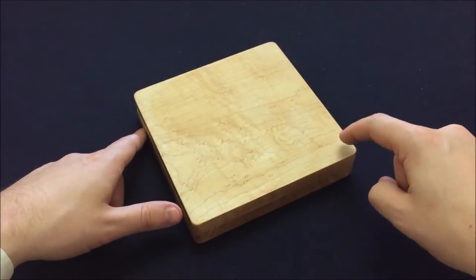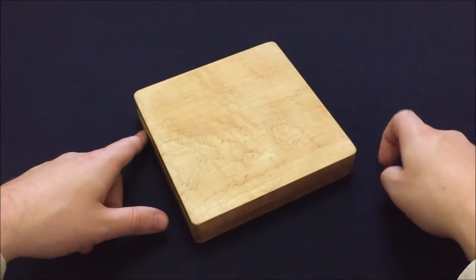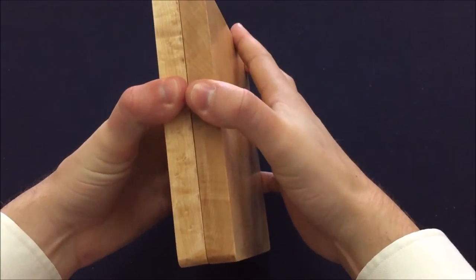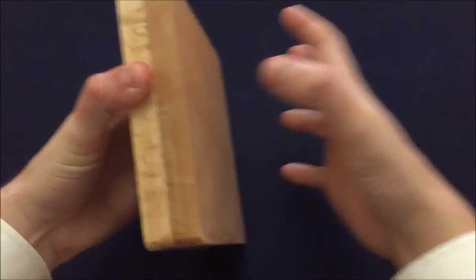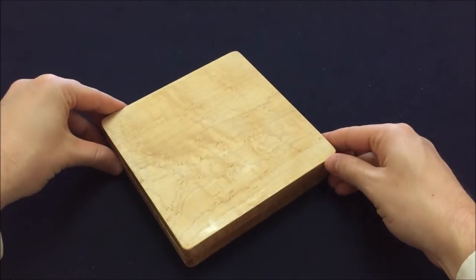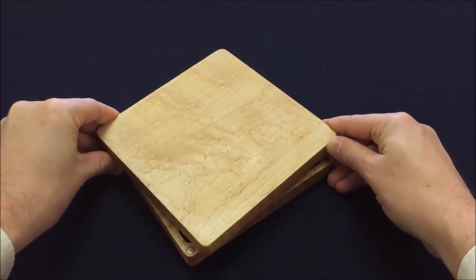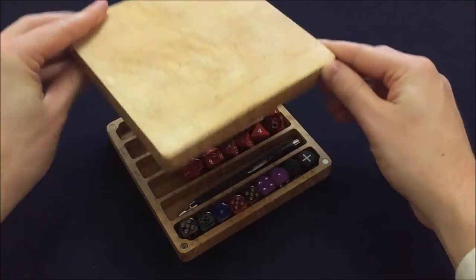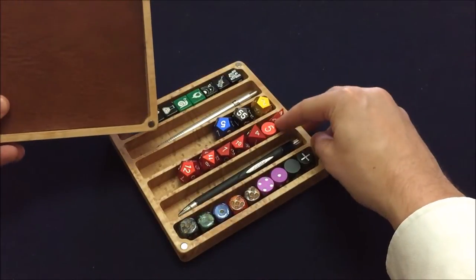Alright so the two pieces are held together by four magnets in the corners. Now to open it you're not really going to be able to just pull the two pieces straight apart. Those magnets really are pretty strong. But if you give a little force to the sides at the corners then that guy is gonna open up really pretty easily.